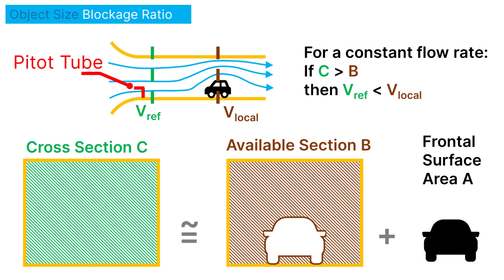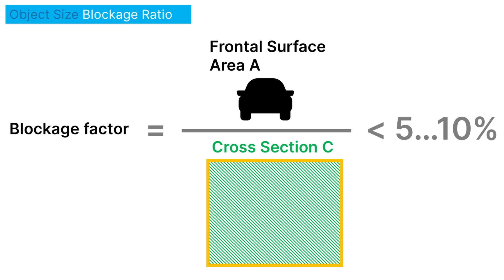Now to compensate for this, you can calculate the blockage factor, which is the ratio between the frontal surface area of your object divided by the cross-sectional area of the test section. Using this blockage factor, you can calculate the local flow velocity and correct the pressure and forces. The recommendations will vary, but depending on the source, you will see recommendations to keep this blockage factor below 5 to 10% to still obtain reliable results.